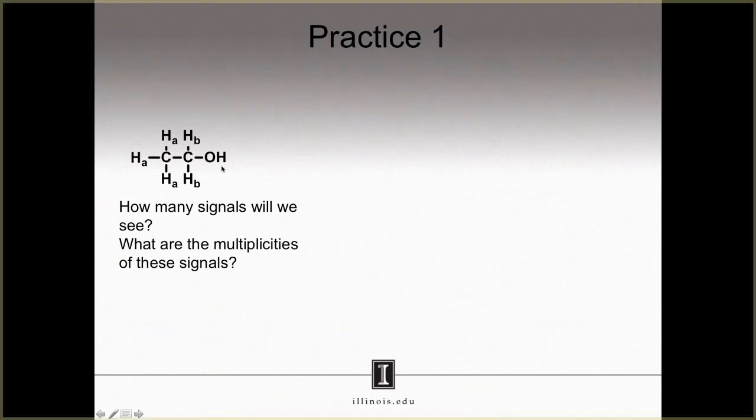What about multiplicities? For the HA protons, I would expect to see a triplet, which I will shorten to just T, because there are only two neighbors to the HA protons. For the HB protons, I would expect to see a quartet, which I will shorten to just Q, because the HB protons have three neighbors. Remember, labile protons do not cause any splitting.